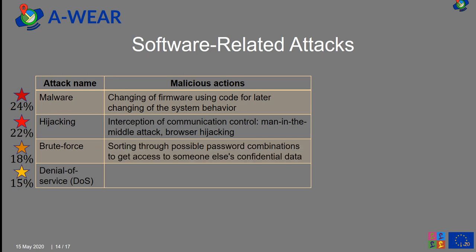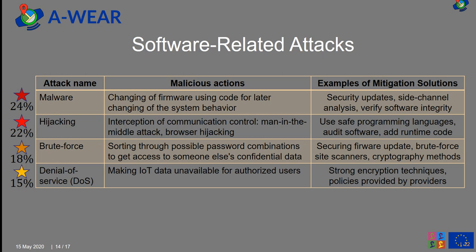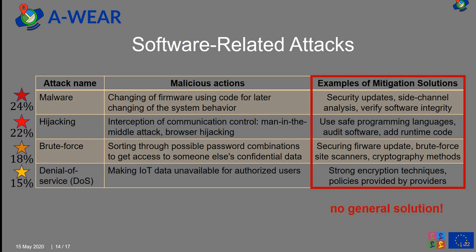Next, brute force — sorting through possible password combinations to gain access to someone else's confidential data. And finally, denial of service — making IoT data unavailable for authorized users. Here, the same as before, if we look at examples of mitigation solutions, we will not find any general one.